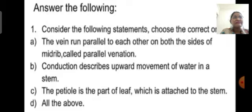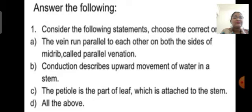Option B: conduction describes the upward movement of water in the stem. We know that the stem conducts water in an upward direction, so this statement is also correct. Option C: the petiole is the part of the leaf which is attached to the stem — this statement is also correct. So options A, B, and C are all correct.